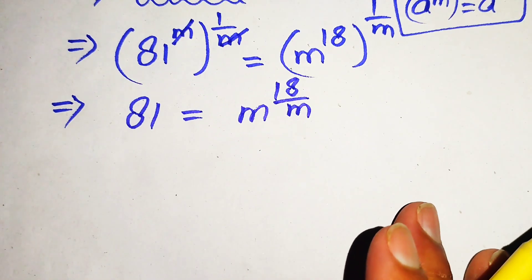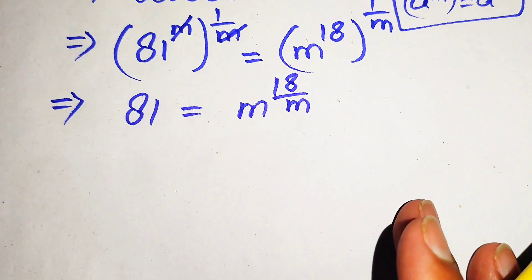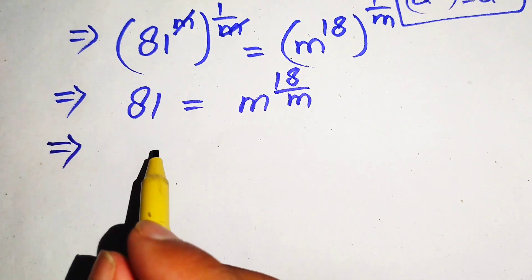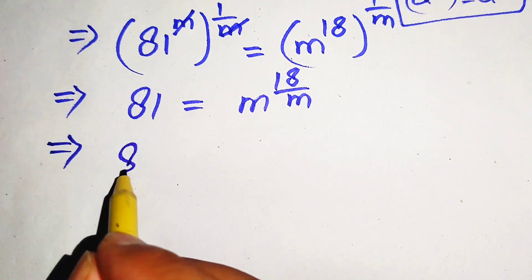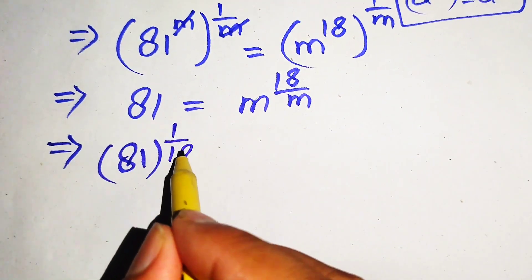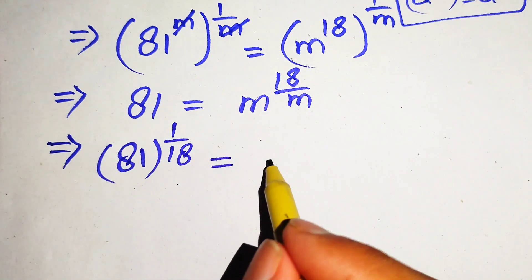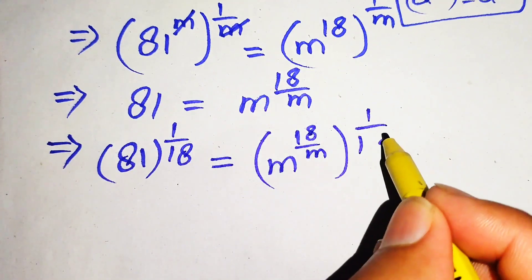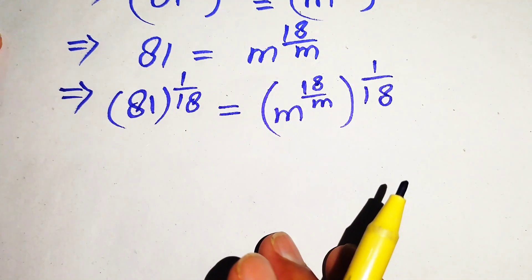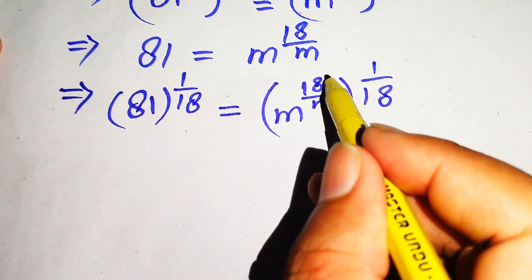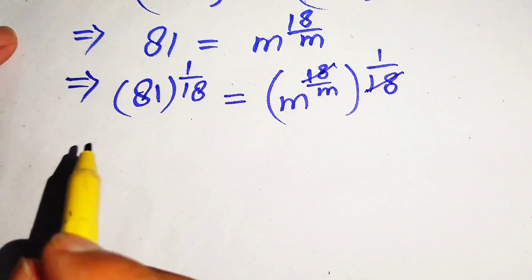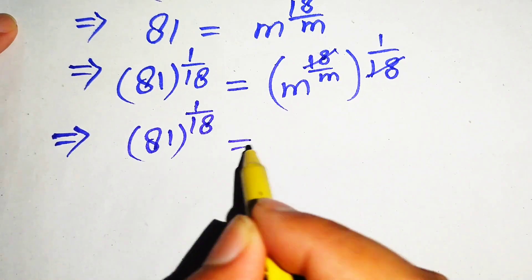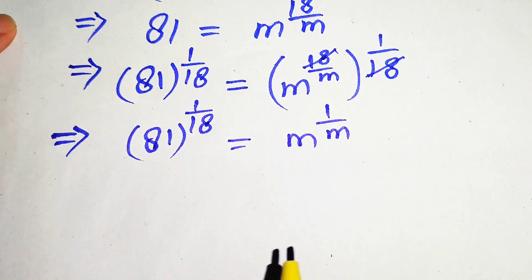We now move the 18th term to the left hand side by taking the 18th root on both sides. This gives us 81 to the power of 1 over 18 equals m to the power of 18 over m, whole power 1 over 18. The 18s cancel, giving 81 to the power of 1 over 18 equals m to the power of 1 over m.